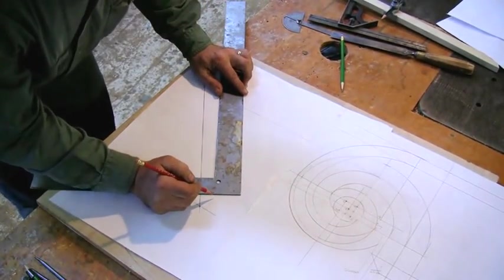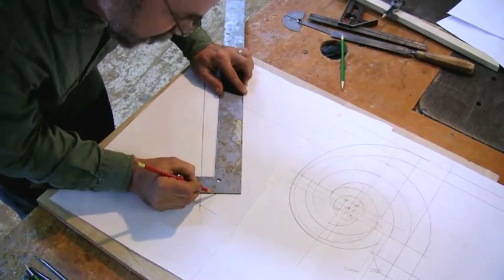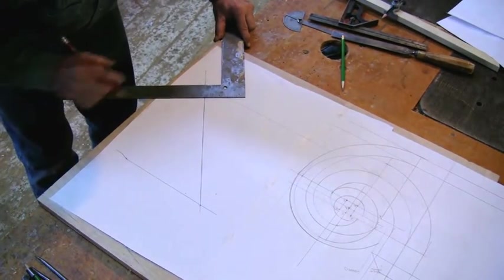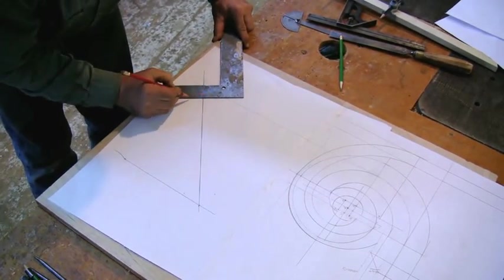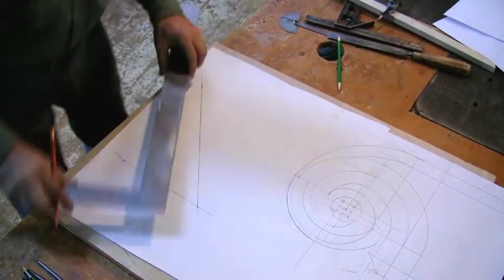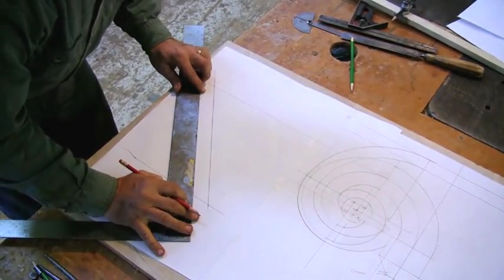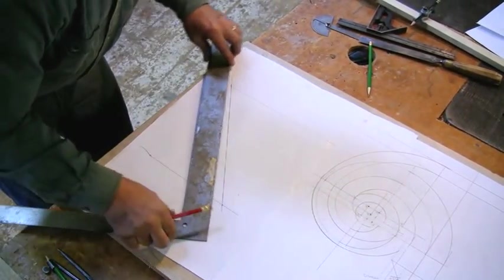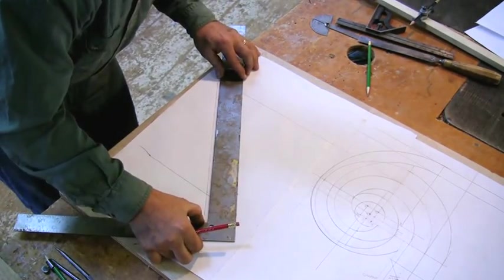The rail is two and a quarter thick. So I'll go one and an eighth this way, and one and an eighth this way. One and an eighth, and one and an eighth. This line represents the bottom of the rail. This line here represents the top of the rail.